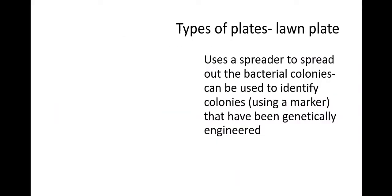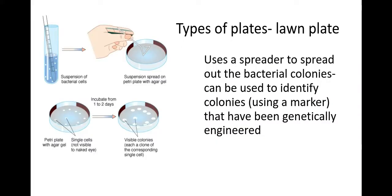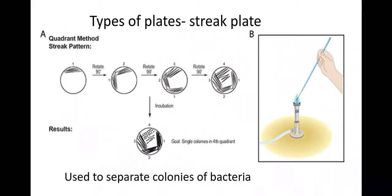Another type is the lawn plate. Here you take your suspension of bacterial cells, place it onto your plate, and spread it around using a spreader. After incubation, this allows you to identify colonies that have been genetically engineered using a marker — such as antibiotic resistance or a green fluorescent protein.